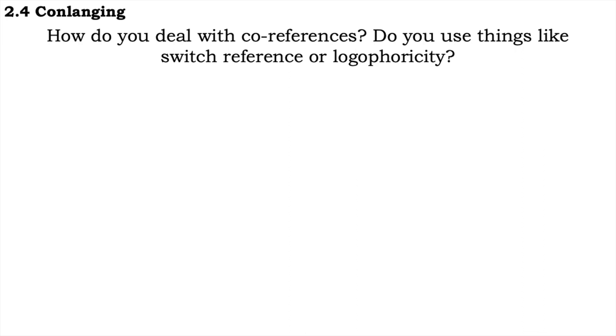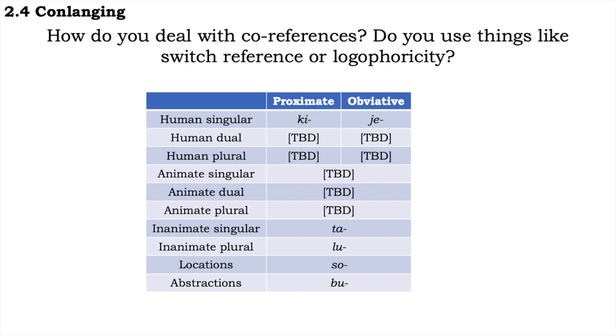How do you deal with coreferences? Do you use things like switch reference or logophoricity? Depends on the language. Bjarkemi is my central project at the moment, so in that language, there are noun classes that have agreement indexed on the verb, where each noun class corresponds to a certain verbal prefix. However, the human classes show a distinction between proximal and obviative forms, where the proximal is used for the most salient argument of the discourse with the obviative used for all others. Sort of.